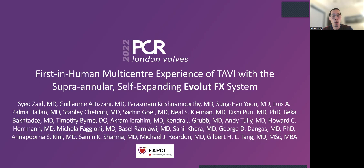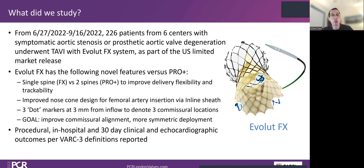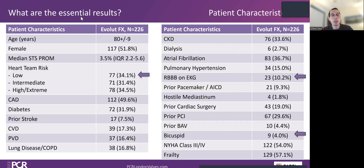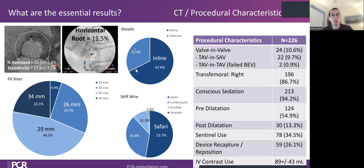We're now over 100 cases. I want to discuss our multicenter experience — presented at London Valve last November, now with the paper submitted, expanded to over 220 patients, all part of limited market release before commercial launch of the Evolut FX. About a third of patients were low surgical risk. We're not cherry-picking: 10% have right bundle branch block and 4% have bicuspids. Two thirds of patients got inline sheath directly. Stiff wire use: 52-53% Safari wire, London Bridge only about 35% — definitely not 100% like you'd expect with ProPlus. Valve-in-valve is 10.6%, including two TAVR-in-TAVR patients, and one patient required a second valve. Pre-dilatation over 50%, post-dilatation very low.